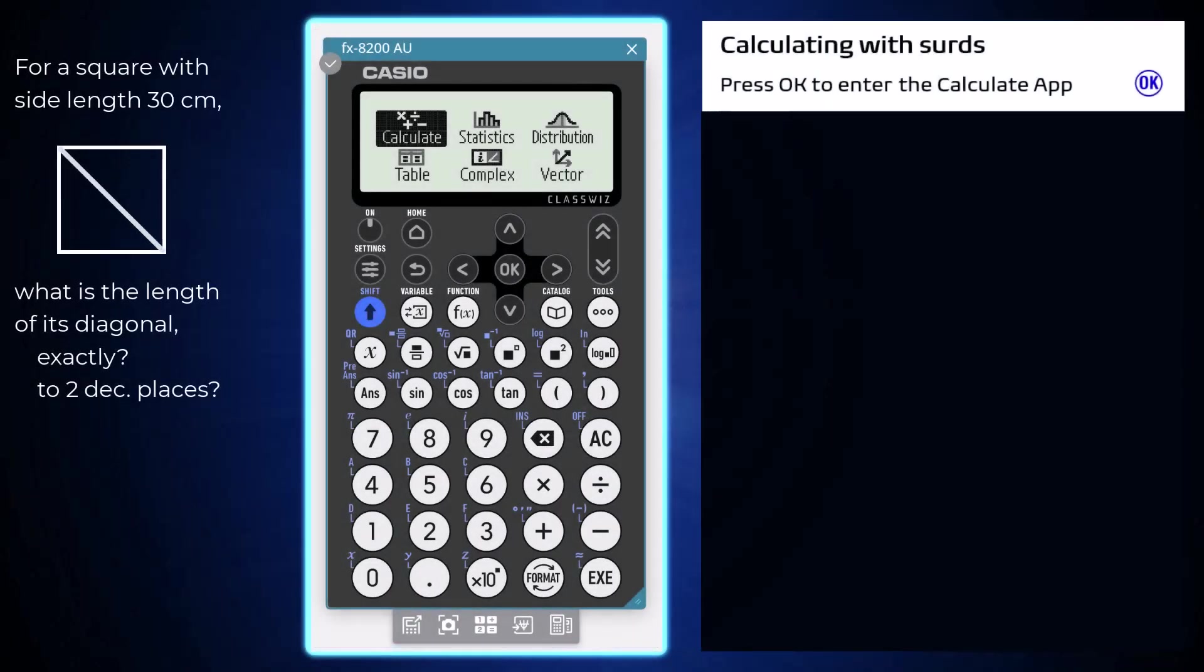Using the Calculate app of Casio FX-8200 AU, calculations with surds can be performed and exact and approximate results can be obtained. To open this app from the home screen, press OK or execute.